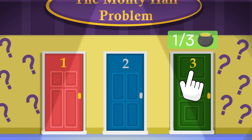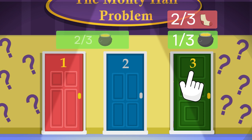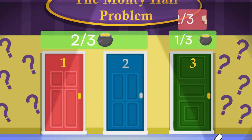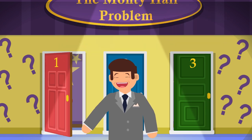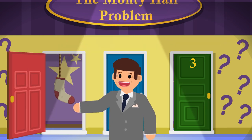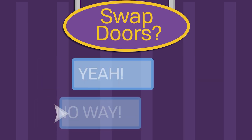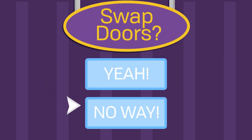There's a 1 in 3 chance we've picked the gold, and a 2 in 3 chance we've picked an old sock. This means it's more likely that the gold is behind a different door. Monty, tricky host he is, reveals one of the socks behind a different door, then asks if we want to swap. So, should we swap or stick with our original choice?